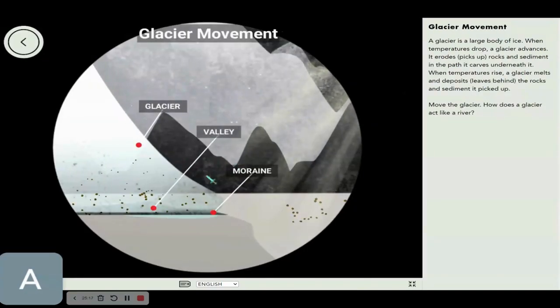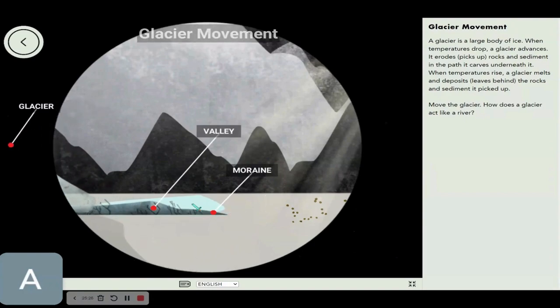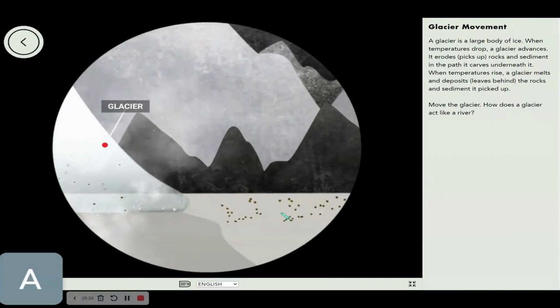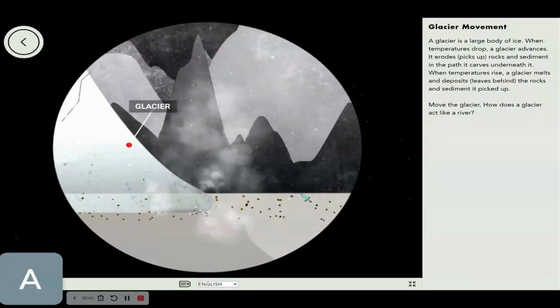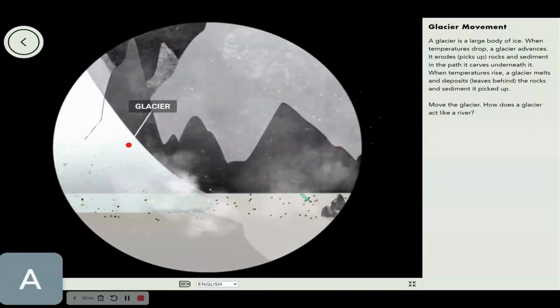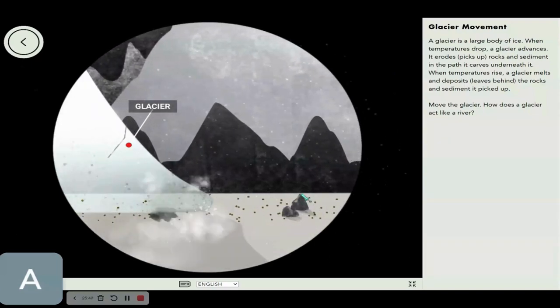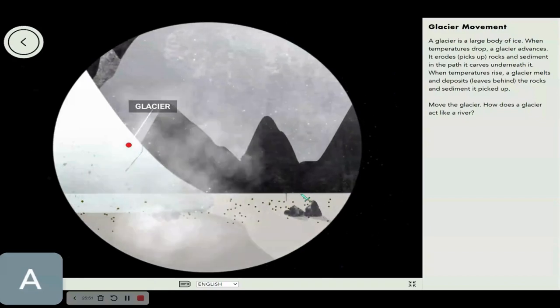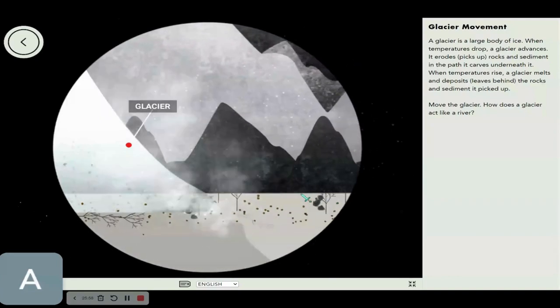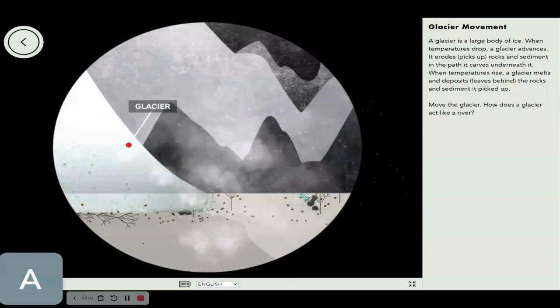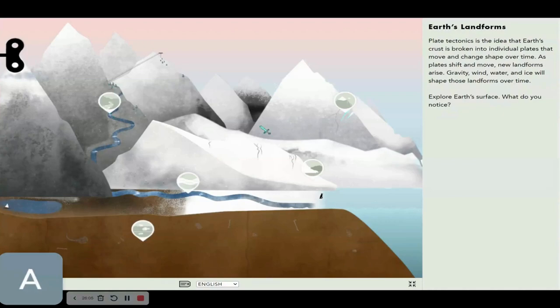Glacier movement. A glacier is a large body of ice. When temperatures drop, a glacier advances. It erodes or picks up rocks and sediment in the path it carves underneath it. Move the glacier. How does a glacier act like a river? That's a good question. A glacier acts like a river in the way that they're both made out of water. That's pretty obvious because it's just a huge block of ice, and in the fact that they both move. They're a body of water that moves, except that the glaciers move when the temperatures drop.